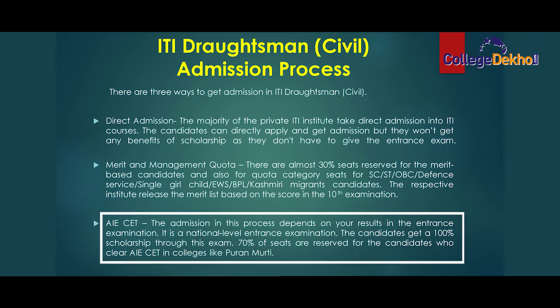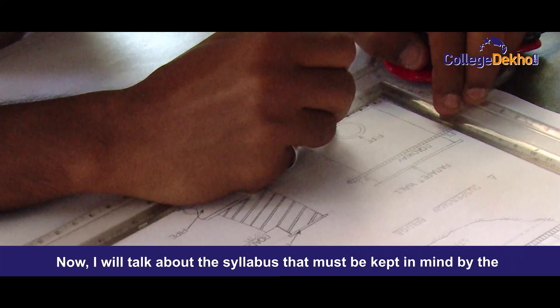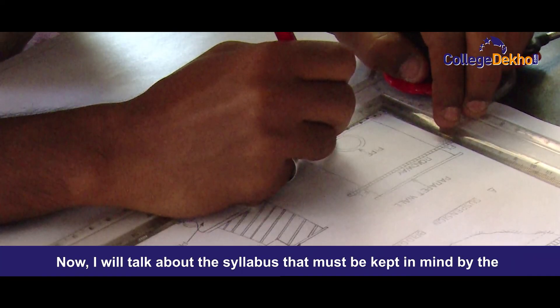Under AICET, admission depends on your result in the entrance examination, which is a national level exam. Candidates get a 100 percent scholarship through this exam, and 70 percent of seats are reserved for candidates who clear AICET in colleges like Puran Murthy.